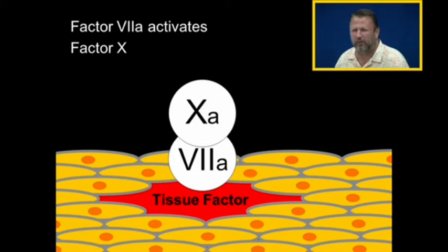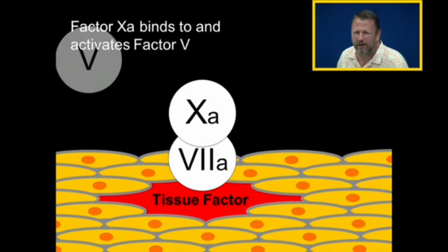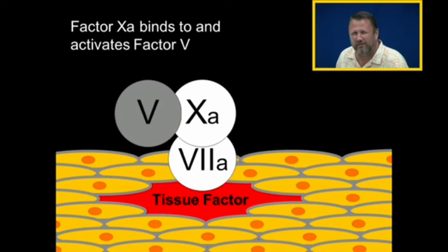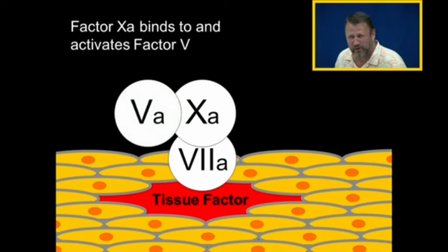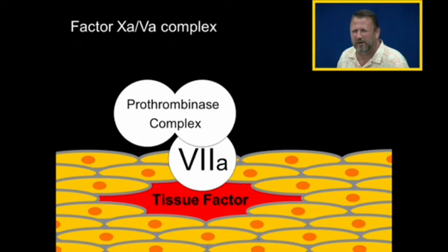In a little bit, we're going to talk about factor 10a inhibitors — drugs that block 10a from doing anything else. Factor 10a will bind to factor five and activate it, and the two of them together might be called the prothrombinase complex.